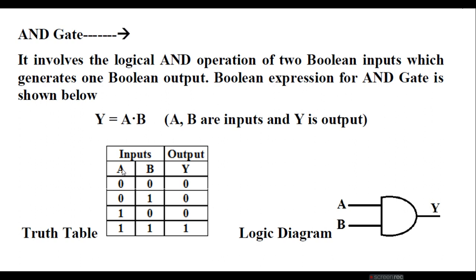For two inputs we get four input combinations, and for those four input combinations we get four corresponding outputs. For zero-zero, the output is zero. Only for the input combination of one-one is the output one. So that's why it is called an AND gate — one ANDed with one gives one, and in all other cases the output is zero.